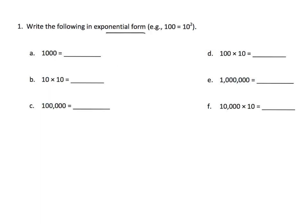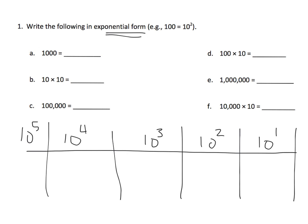Write the following in exponential form — so what does that mean? We're going to begin with 10 to the first power. Well, 10 to the first power means 10. And 10 to the second power means 10 times 10. And 10 to the third power means 10 times 10 times 10. And 10 to the fourth power means 10 times 10 times 10 times 10, and so on.